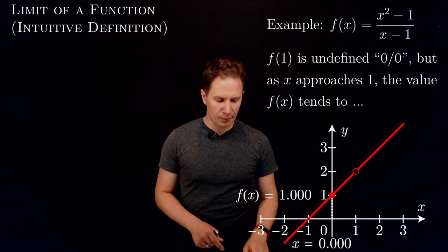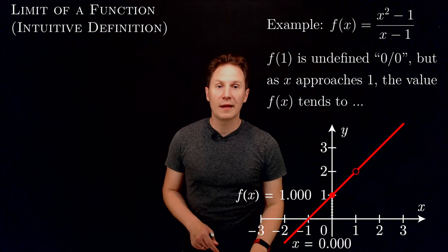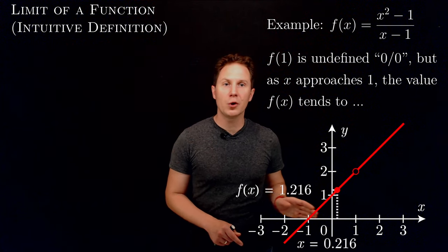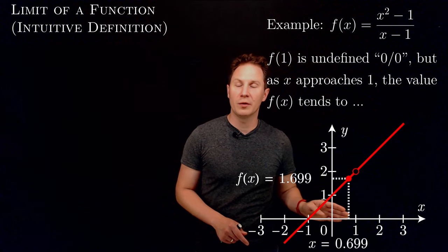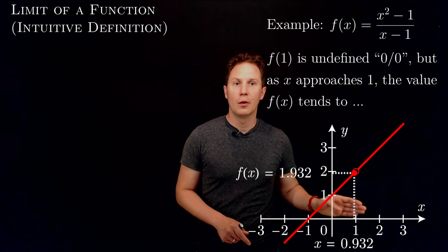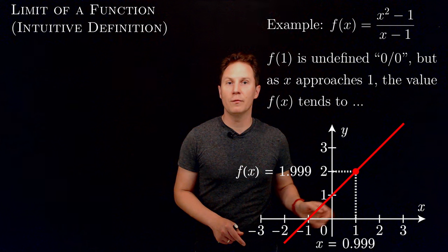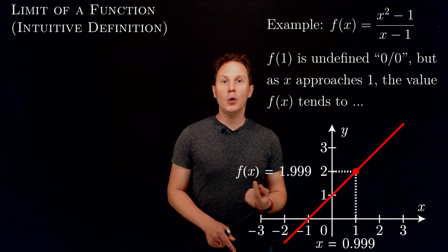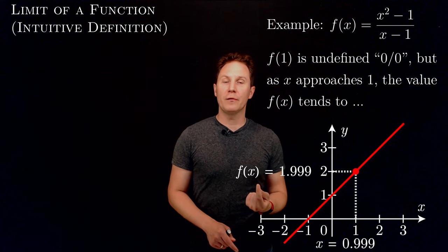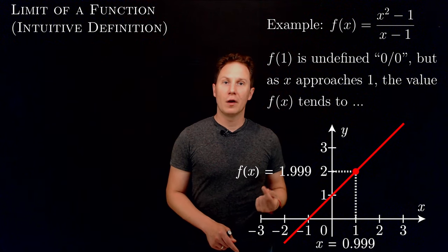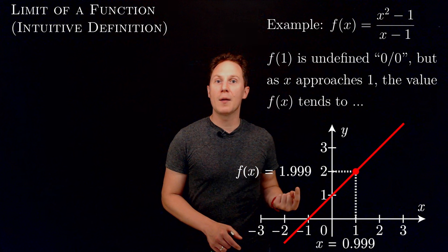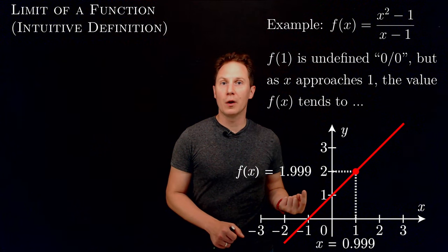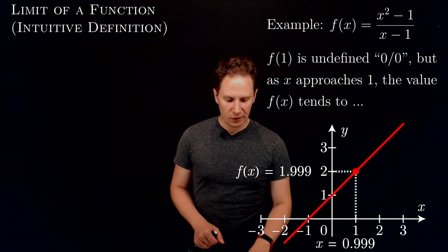However, and this is more important: as we let x approach 1 — you can see x approaching 1 from the left here, through numbers less than 1 — the output values f(x) are getting closer and closer to the number 2 along the y-axis.